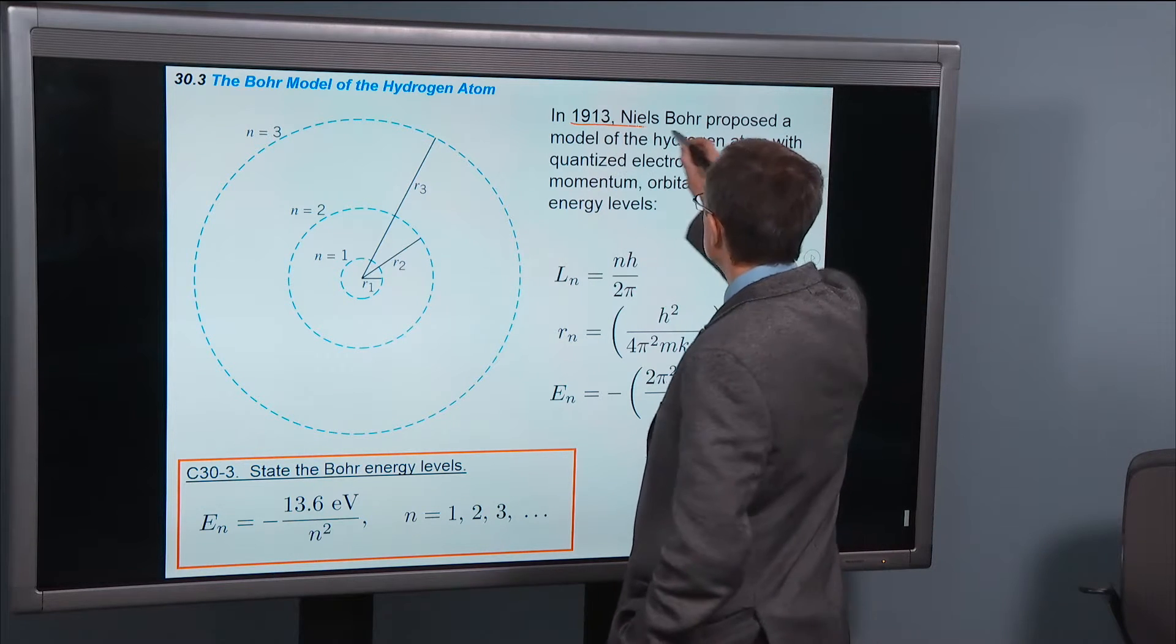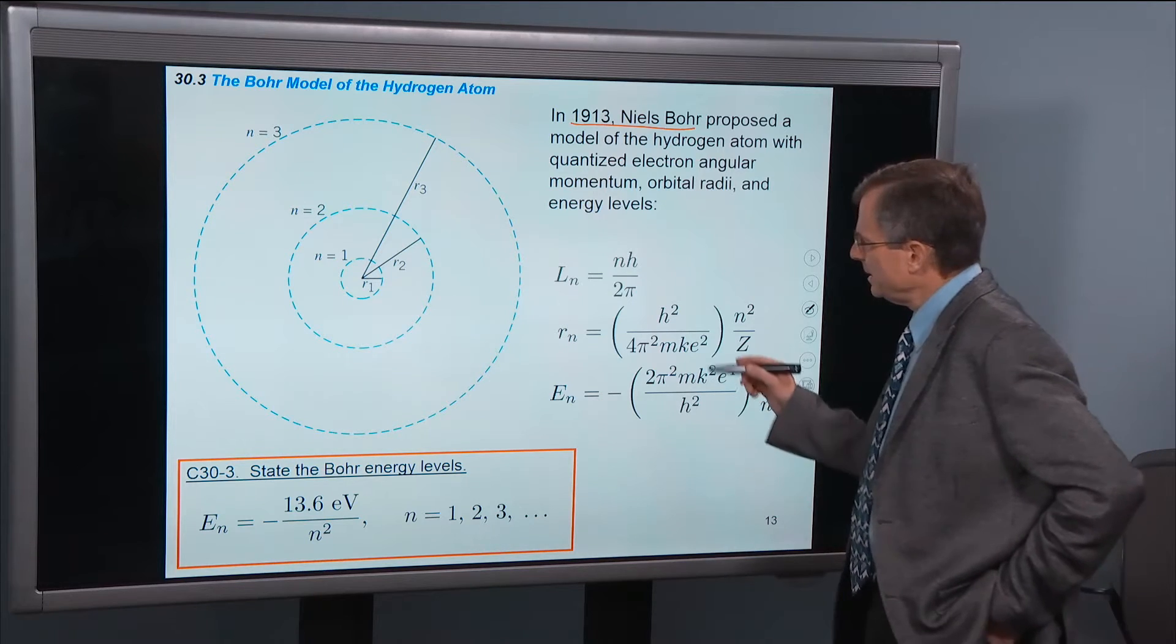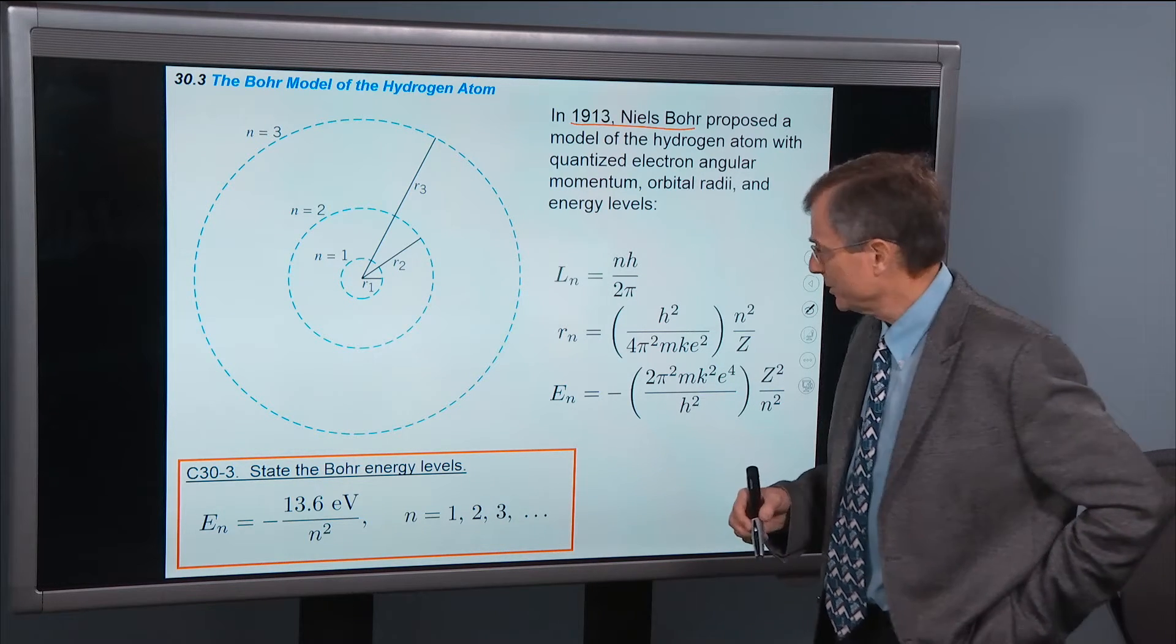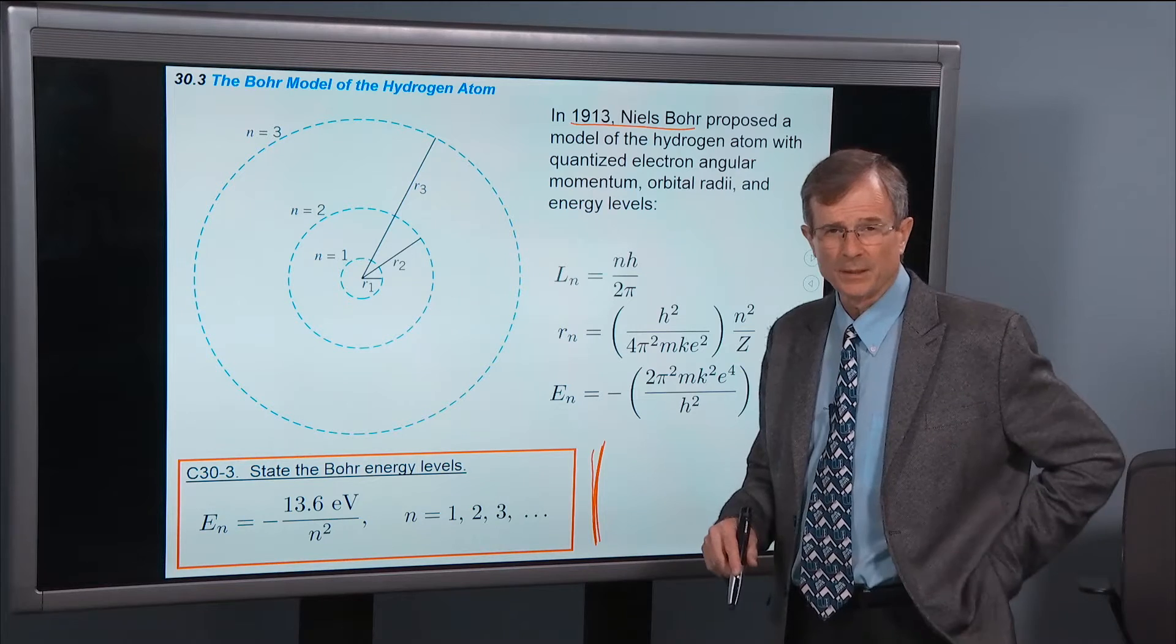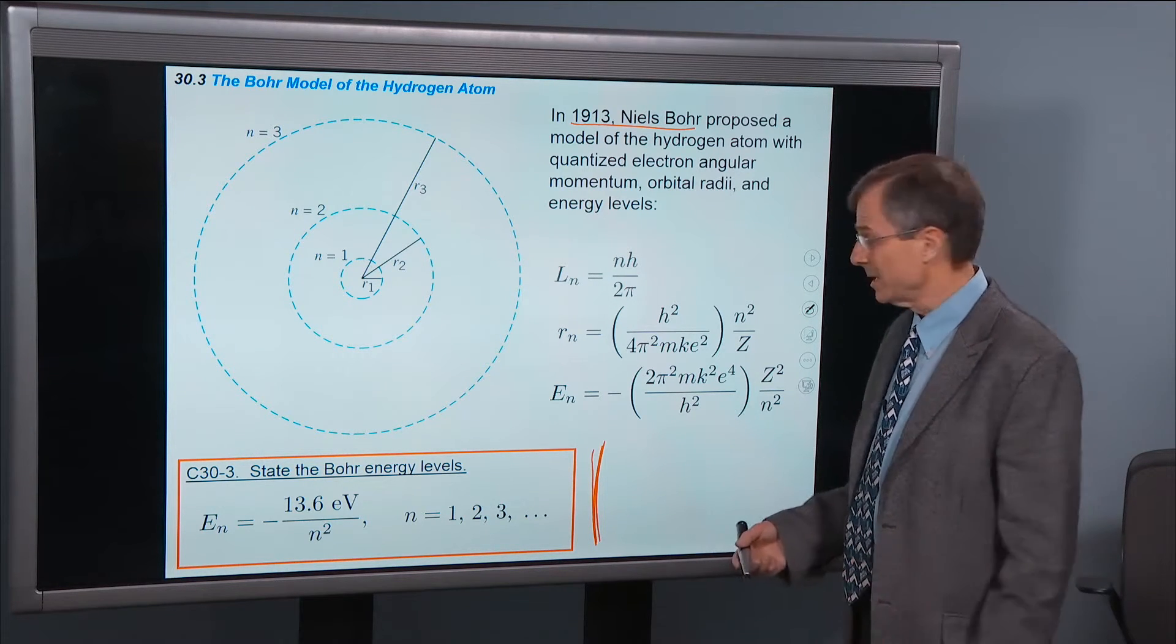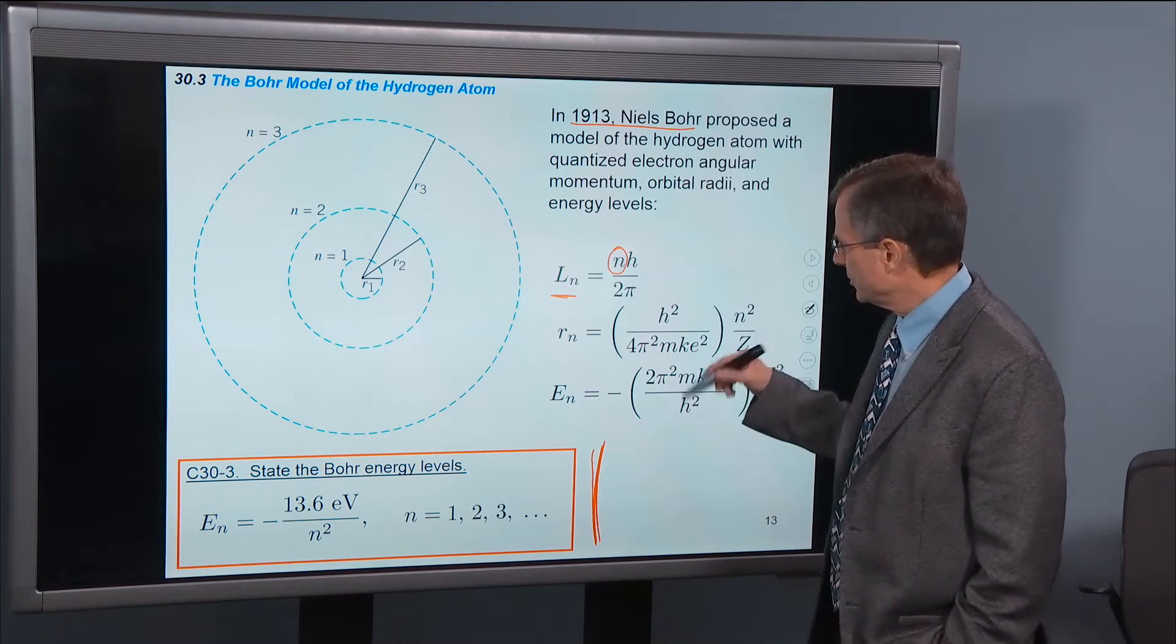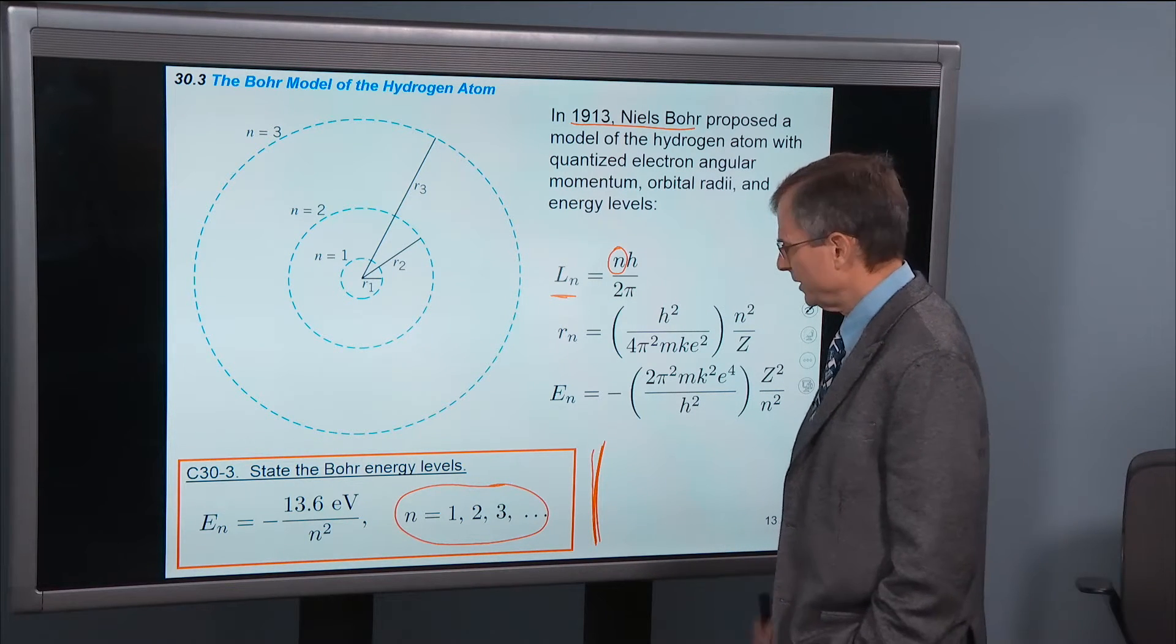In 1913, a fellow named Niels Bohr proposed a model of the hydrogen atom with quantized electron angular momentum. And his idea was really radical. And as it turns out, in many ways, it was wrong. But it contains a lot of correct physics in it. He said that the angular momentum is quantized. He said that it comes in units of h, Planck's constant, divided by 2π, where n is called a quantum number. And it's just an integer.